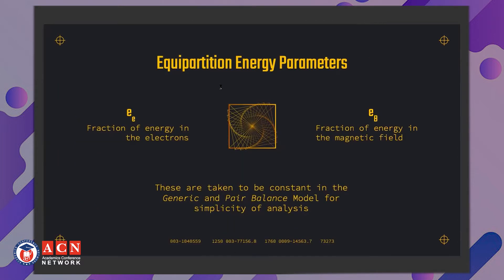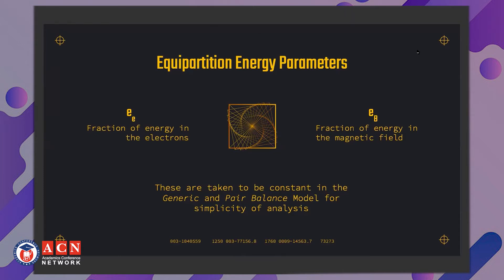In this analysis, two equipartition energy parameters are of particular importance: epsilon_e, the fraction of energy in the electrons, and epsilon_B, the fraction of burst energy in the magnetic field. In all analyses so far, these are taken to be constant in the two most popular models — the generic and pair-balance models — for simplicity, since many parameters are estimated to effectively understand the physics behind gamma-ray bursts.